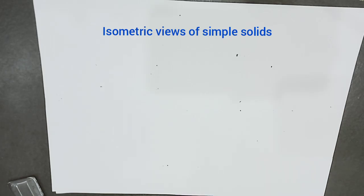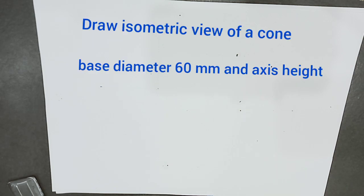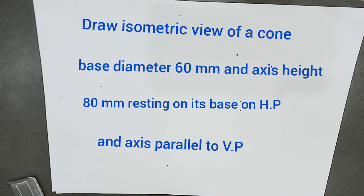Hi, welcome to the discussion of isometric views of simple solids. We are now discussing construction of isometric view of a cone. The given problem is: draw isometric view of a cone of base diameter 60mm and axis 8mm long, resting on its base on HP and axis vertical.